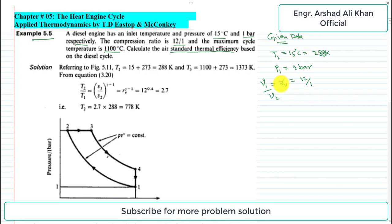The maximum cycle temperature is 1100 degrees centigrade. This is the temperature at state 3, T3. Converting to Kelvin: T3 = 1100 + 273 = 1373 K. We are required to find the air standard thermal efficiency, eta.